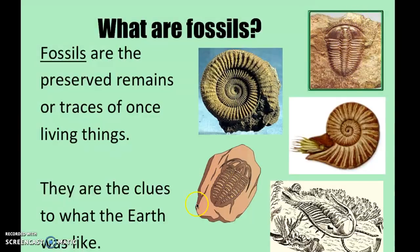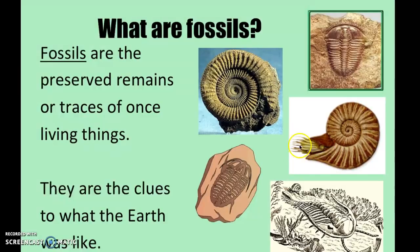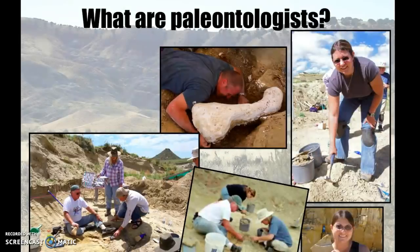For example, here's a trilobite fossil on rock. You wouldn't necessarily know from the fossil alone that they could move around like roly-poly bugs, which are their descendants. They lived underwater in the Paleozoic Era among corals and sponges. Similarly, this large swirly shell is from an ammonite, an ancestor of the squid, which belongs to the cephalopod family that includes squids and octopods.